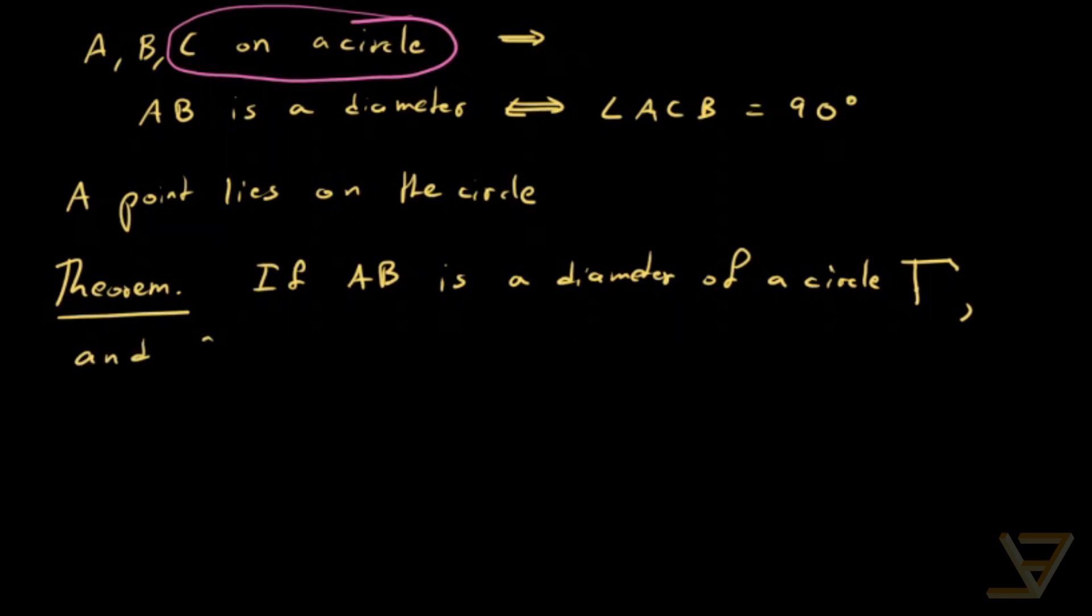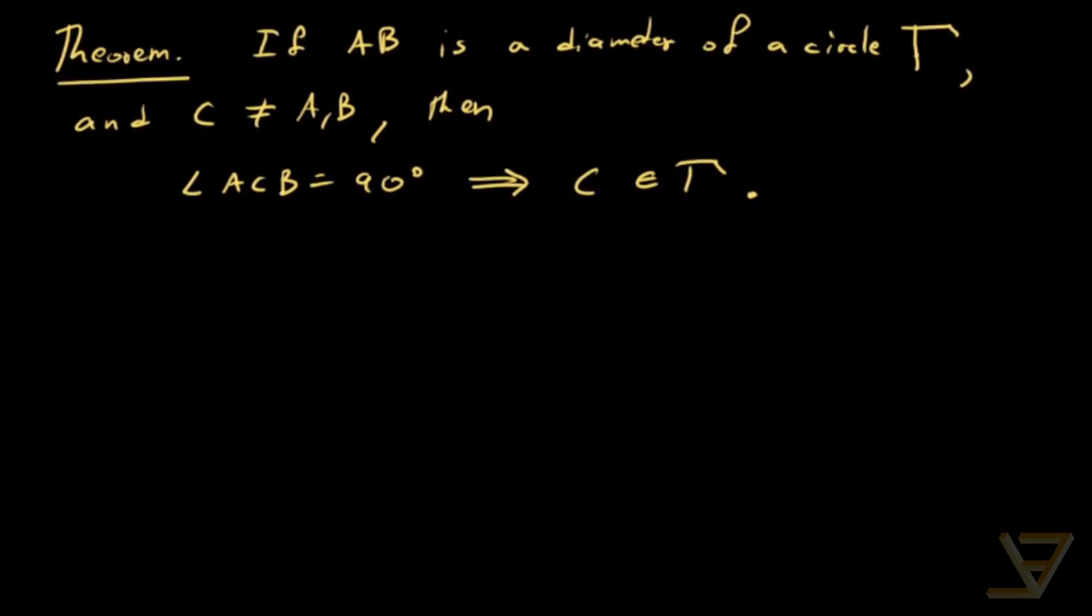And C is a point that is not A or B. Then if angle ACB is equal to 90 degrees, then C lies on gamma. So basically we're proving that we have a 90 degree angle and that forces the point where the 90 degree occurs to lie on the circle.